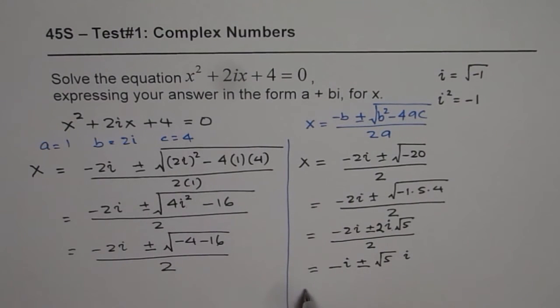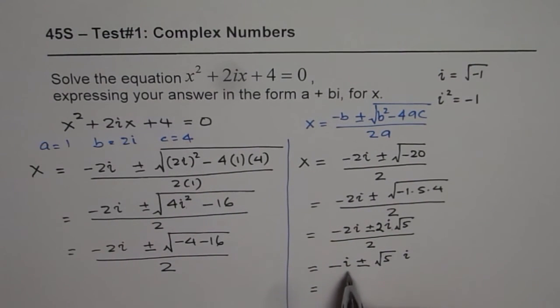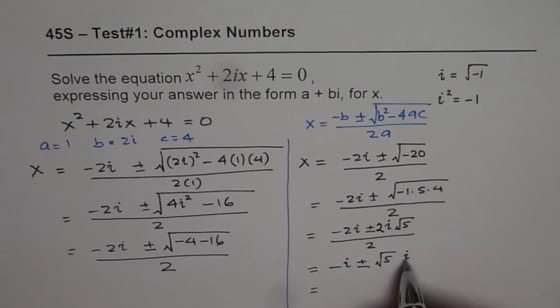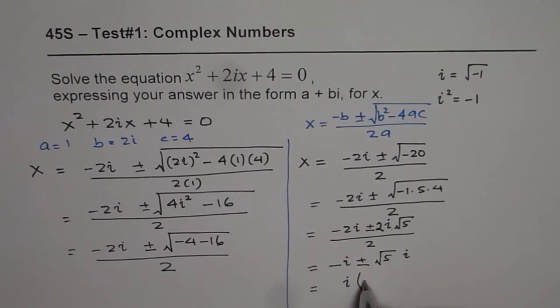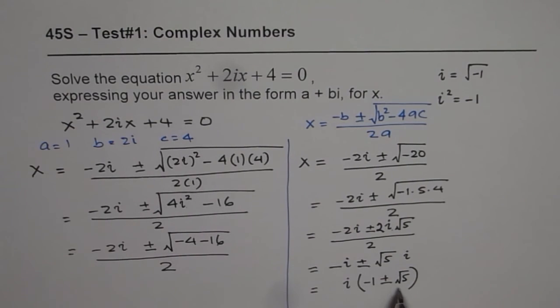Which could be written as equal to, if I take i common, I could get within square root minus 1 plus or minus square root of 5. So that is the answer.